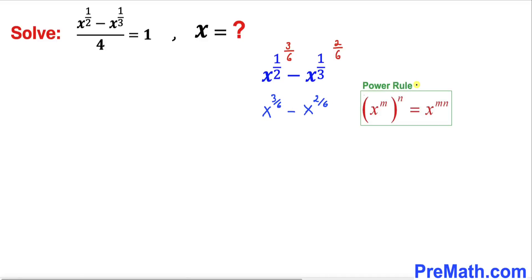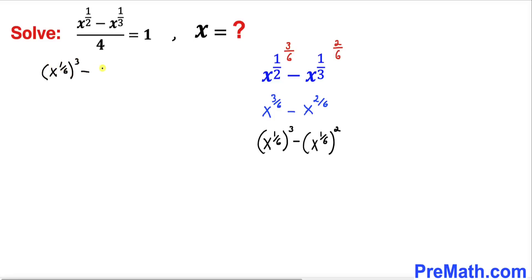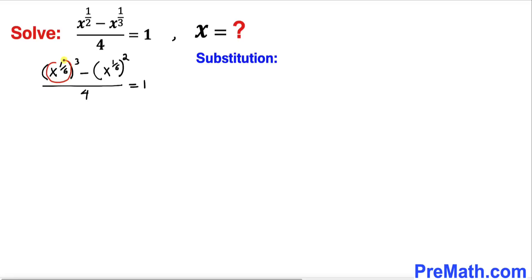We have the same common denominator 6. Recalling the power rule of exponents, the expression becomes x^(1/6) whole to the power 3, minus x^(1/6) whole to the power 2. So the original equation now looks like: [x^(1/6)]^3 minus [x^(1/6)]^2, all divided by 4, equals 1.